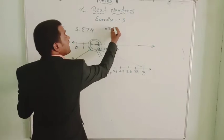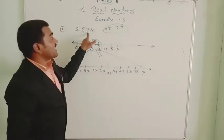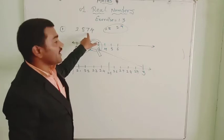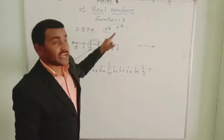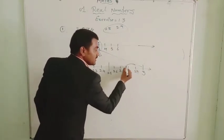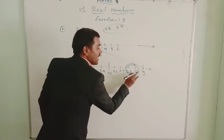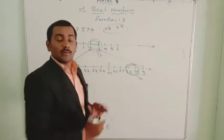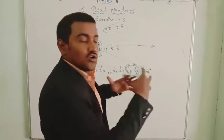Now we see that 2.874 — with 8.7 after the decimal — lies between 2.8 and 2.9. So we need to observe very closely between 2.8 and 2.9.